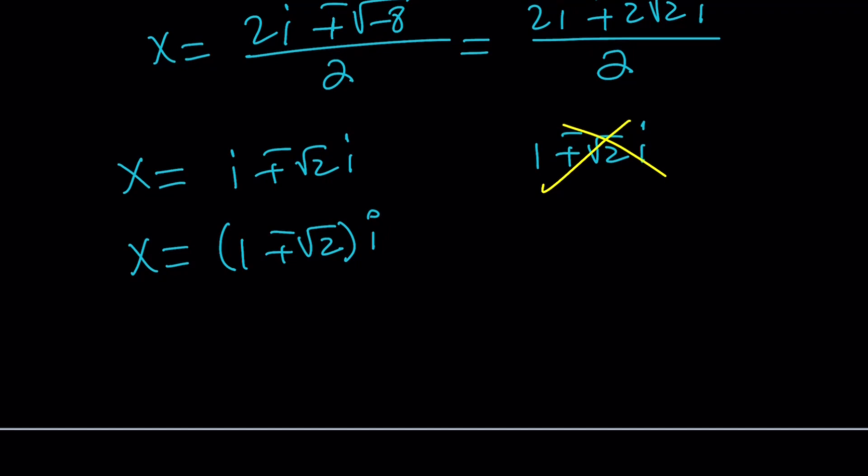So, we got the answer, right? But does that work? Let's test it out real quick. We need to find what x plus 1 over x is going to equal. So, let's go ahead and find 1 over x first. And what am I going to use for x? Let's use the positive version. I don't know if it's going to be easier the other way around. But let's just use this. I don't think it would matter.